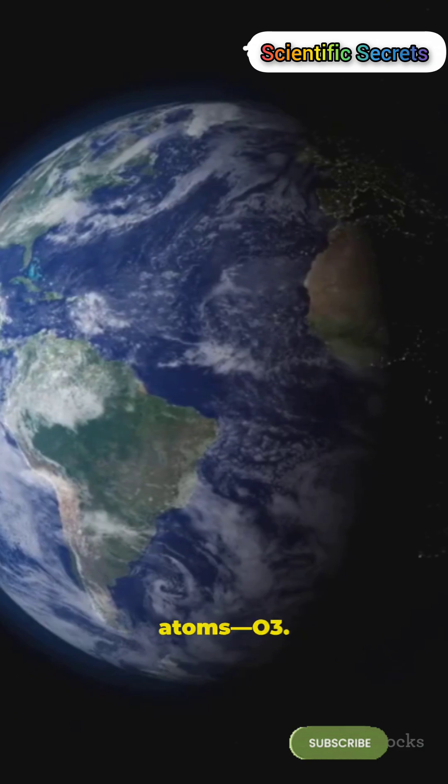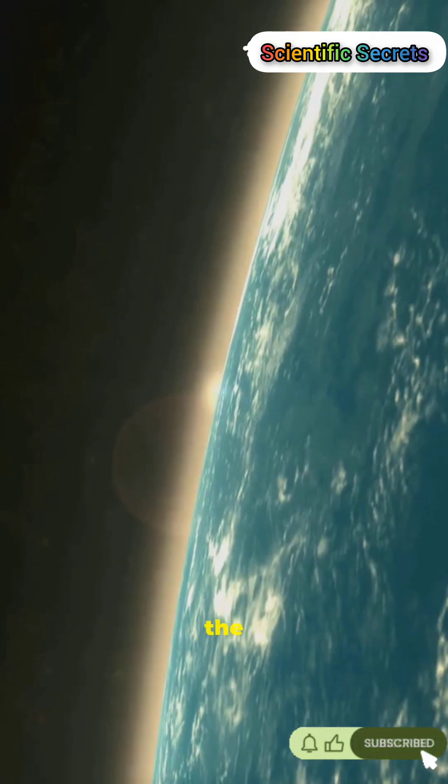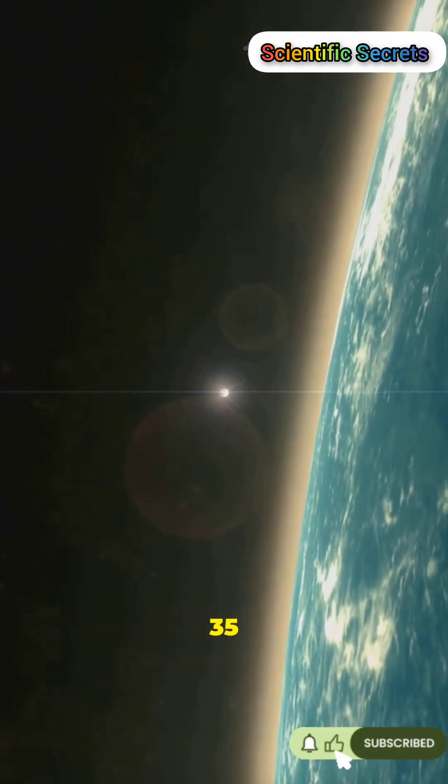Ozone is three oxygen atoms, O3. It forms in the stratosphere, 15 to 35 kilometers up.